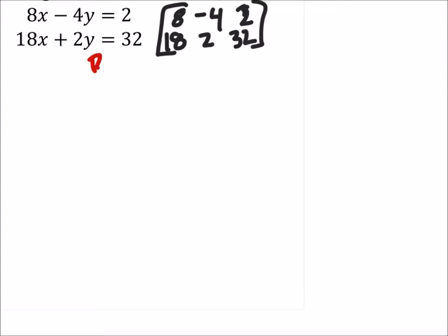So if I take row 2 and multiply it by 2, then I'll have the same but opposite coefficient in my y column there. So that gives me a new matrix. I'm not doing anything to the top row just yet, and my bottom row 2 times 18 is 36, 2 times 2 is 4, 2 times 32 is 64.